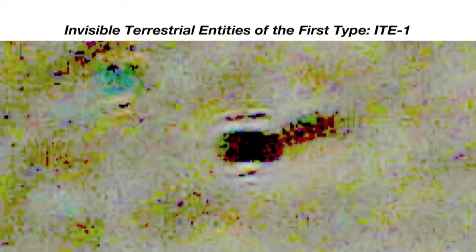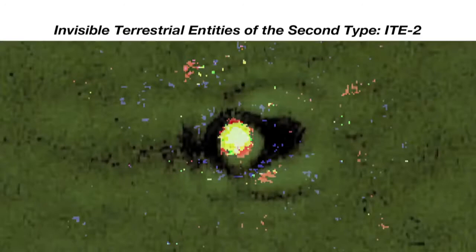We have detected at least two types of ITE. The first type, also called dark ITE, essentially consists of entities leaving a dark image in the background of digital cameras attached to our new telescope. The second type, called bright ITE, essentially consists of entities leaving a bright image in the background of digital cameras attached to our telescope, often visible without any enlargement.